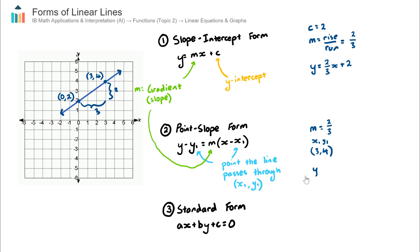Now that we have these two values, let's substitute into our point-slope form equation. This gives us y minus y₁ — and y₁ is 4 — equals m, our gradient, which is 2/3, times (x minus x₁), so x minus 3. That is actually a perfectly valid equation of this line, though IB questions will typically ask for slope-intercept or standard form. But it does represent this blue line.